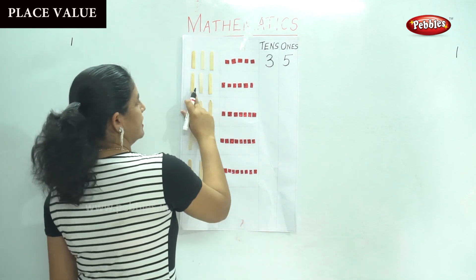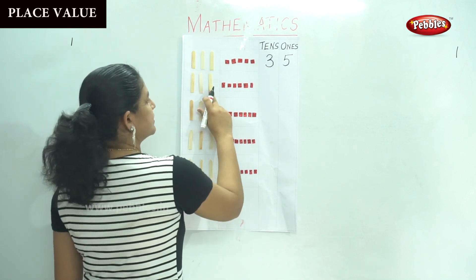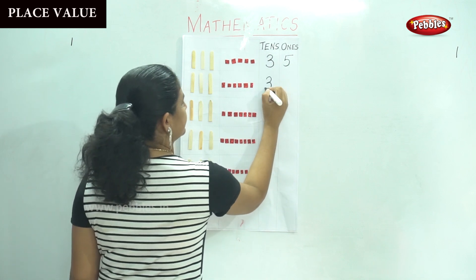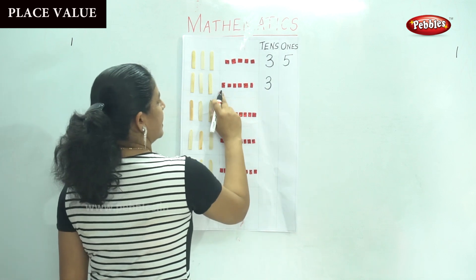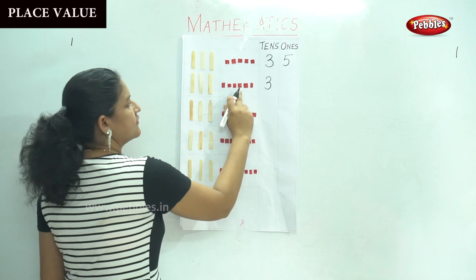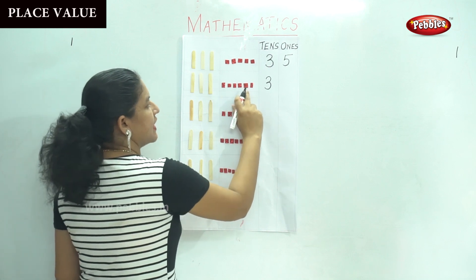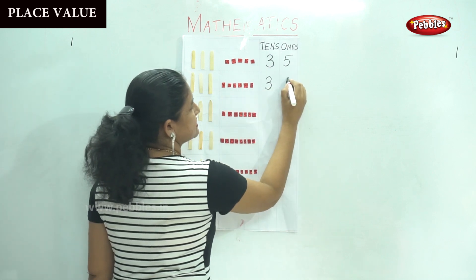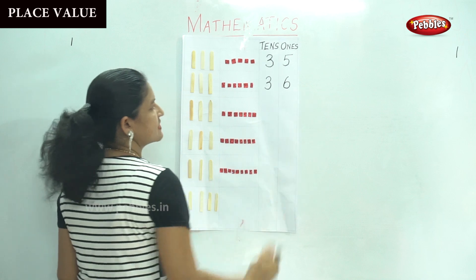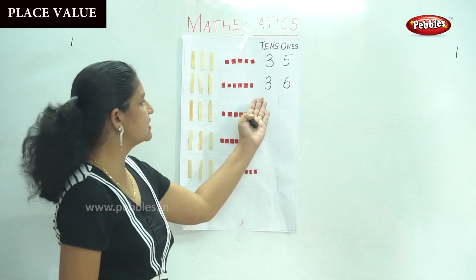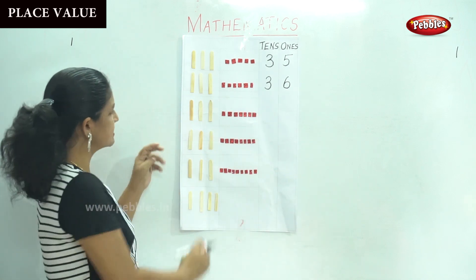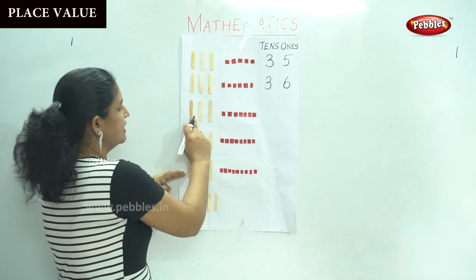Next: one, two, three — we have three tens. And in the ones: one, two, three, four, five, six — six ones, which gives us the number thirty-six.